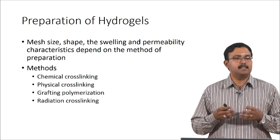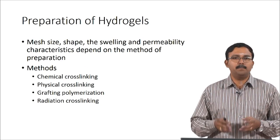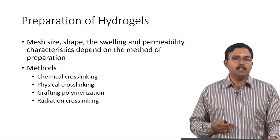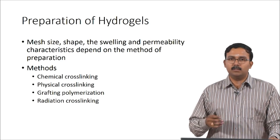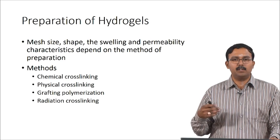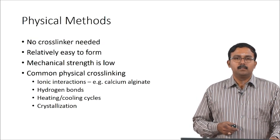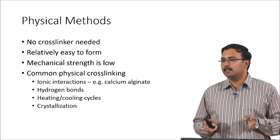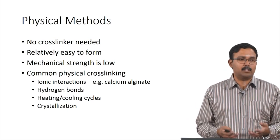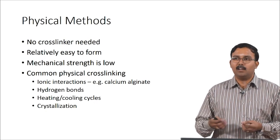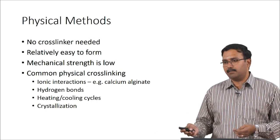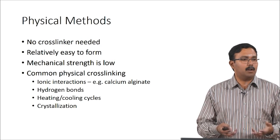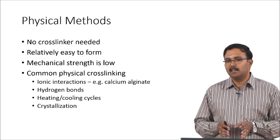While preparing hydrogels, the mesh size, shape, swelling, and permeability characteristics all depend on the method of preparation. The method can be based on chemical or physical crosslinking, or graft polymerization and radiation crosslinking. The advantage of using physical crosslinking is that no crosslinker is needed — any additional chemicals can cause problems, as the crosslinker could be toxic or could have unintended biological effects even if not directly toxic. Physical crosslinking does not require a crosslinker, making it very safe, and it is also relatively easy to form. However, the mechanical strength is low for most physical crosslinking because these are just weak interactions.